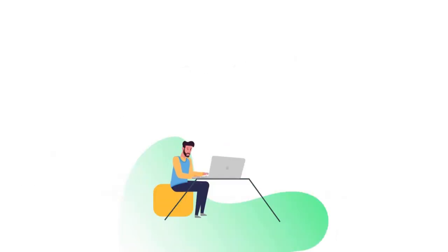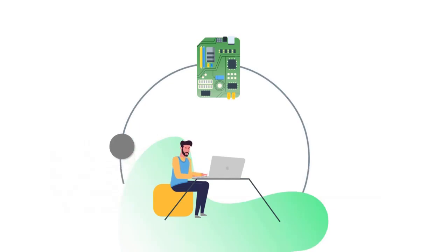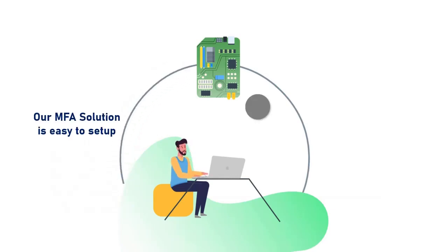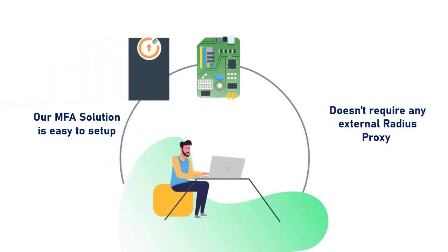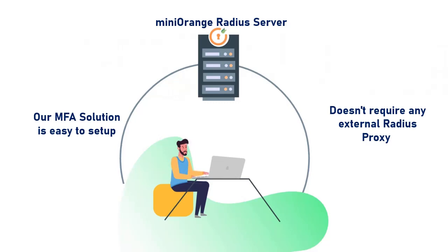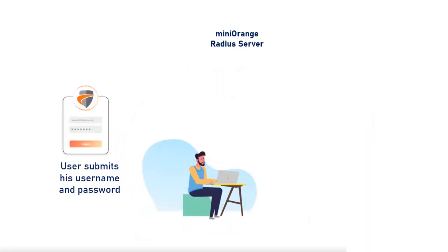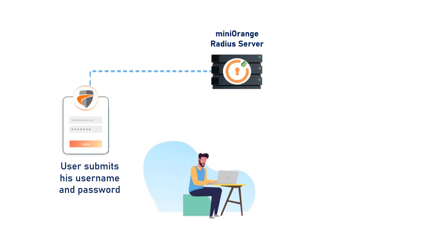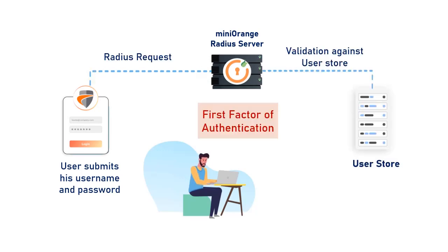Unlike other MFA solutions, our solution is easy to set up and does not require any external Radius proxy module to be installed on top of your Cisco AnyConnect servers. User submits his username and password, which is accepted by the Mini Orange Radius server as a Radius request.